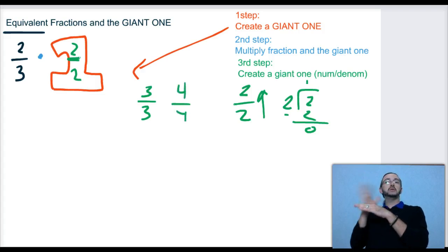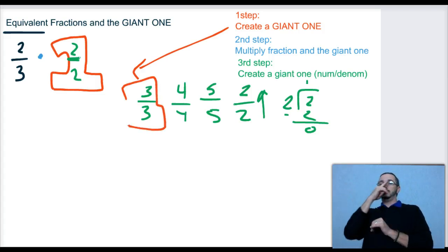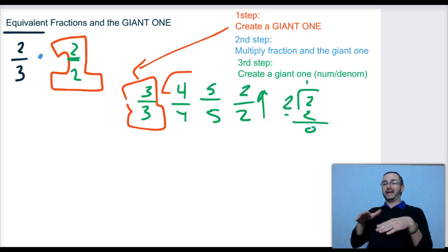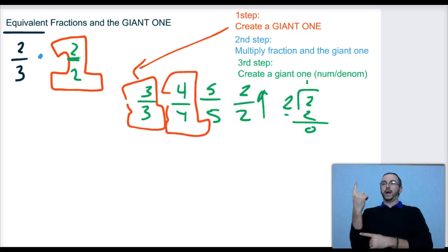4/4, that's a giant one. 5/5, all of those are giant ones, you guys, because they all, when you think up, they all equal 1. That's why we call it the giant one.